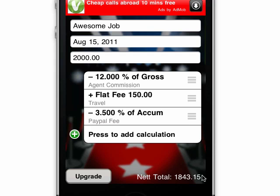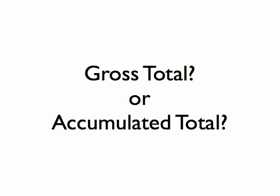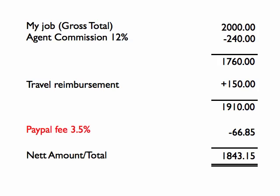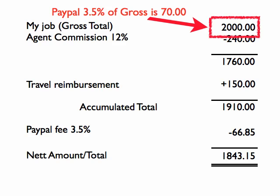So now you can see the net total has changed down the bottom here to reflect all these new calculations. Do you know the difference between gross total and accumulated total? Let's take a look at that PayPal fee. PayPal takes 3.5% of whatever the amount is being transferred — in this case $1,910, which is what has accumulated so far. 3.5% of that is $66.85. If we made this fee 3.5% of the gross total, that would be $70. That's no use to us here though, because the total we're being sent through PayPal is no longer $2,000.